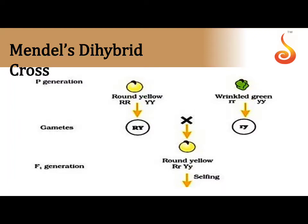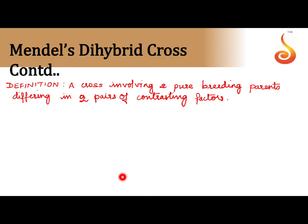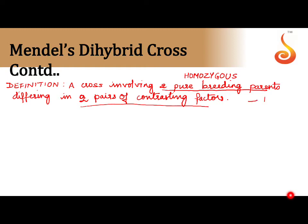Mental dihybrid cross, or two gene inheritance, is a very important question which comes every alternate year, so it comes for 5 marks. Let us go step by step and understand it. First we write the definition: a cross involving two pure breeding parents differing in two pairs of contrasting factors. Pure breeding means homozygous condition, and we are considering two different characteristic features. This definition itself carries one mark.